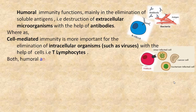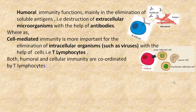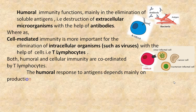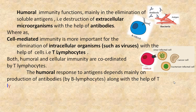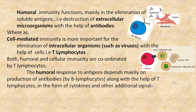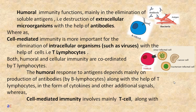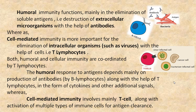Both humoral and cellular immunity are coordinated by T lymphocytes. The humoral response to antigens depends mainly on the production of antibodies by B lymphocytes, along with the help of T lymphocytes in the form of cytokines and other additional signals. Whereas cell-mediated immunity involves mainly T cells, along with activation of multiple types of immune cells for antigen clearance.